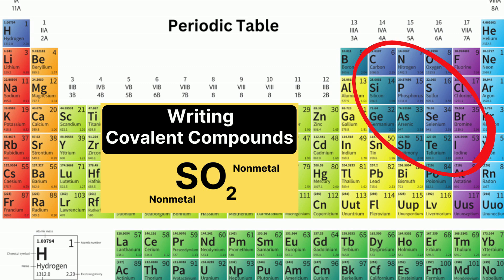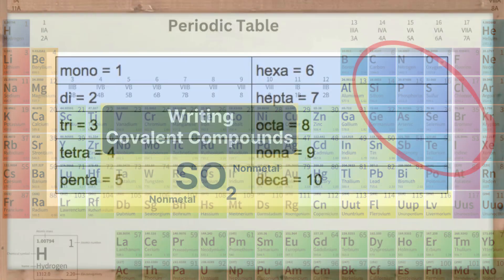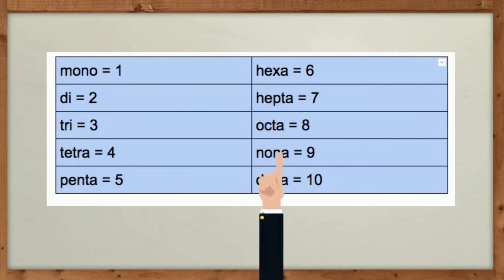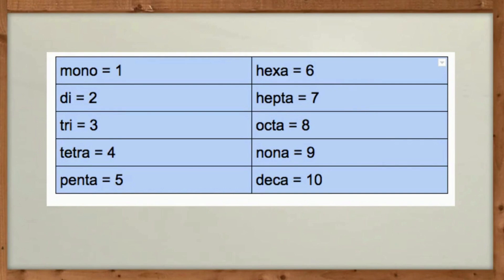Covalent compound formulas use prefixes. The prefixes go like this: mono is 1, di is 2, tri is 3, tetra is 4, penta is 5, hexa is 6, hepta is 7, octa is 8, nona is 9, and deca is 10. It will help you if you memorize these.